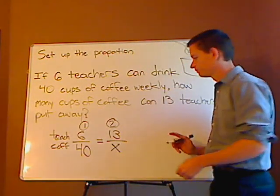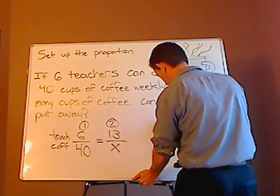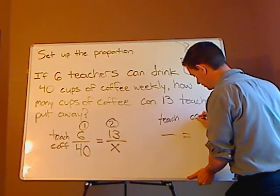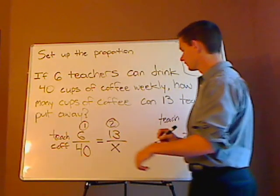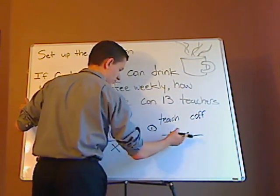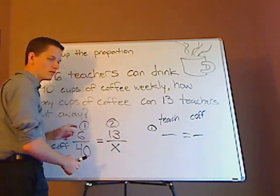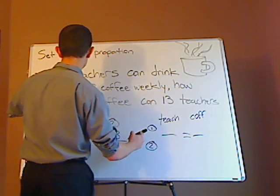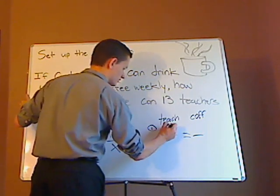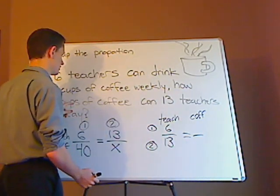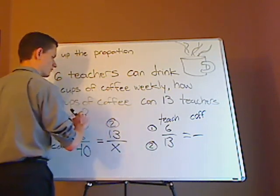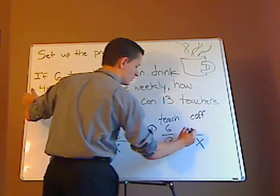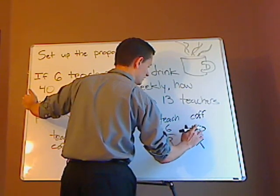Now I'll show you a different way to set it up. Let's put teachers first, going vertically, and then the same thing with the coffee — make it vertical as well. But the ratios we'll make horizontal instead. So teachers with teachers: the first is six, the second is 13. Now the cups of coffee for the 13 teachers — I don't know what that is — that's X. And the cups of coffee for the six is 40.